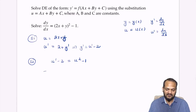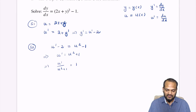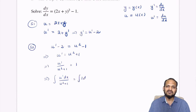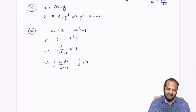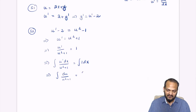Simplifying and applying separation of variables, we get u prime over u squared plus 1 is equal to 1, which means du over u squared plus 1 equals dx on the right-hand side.